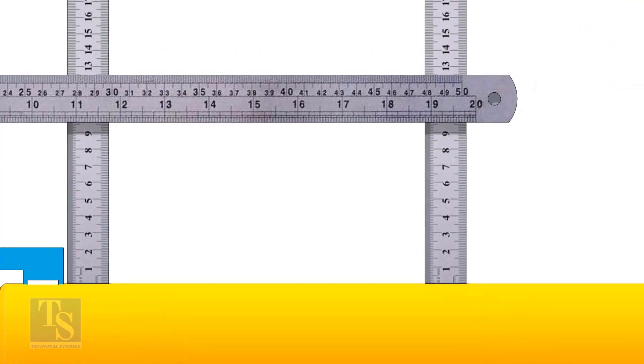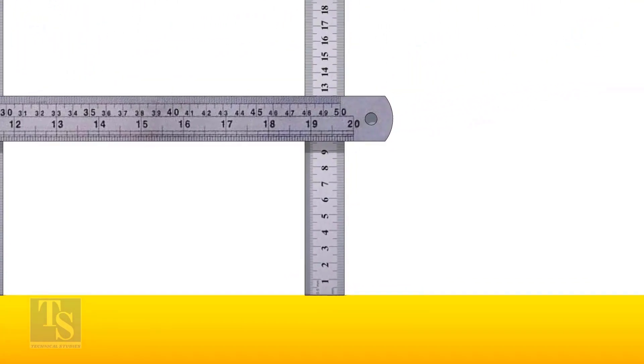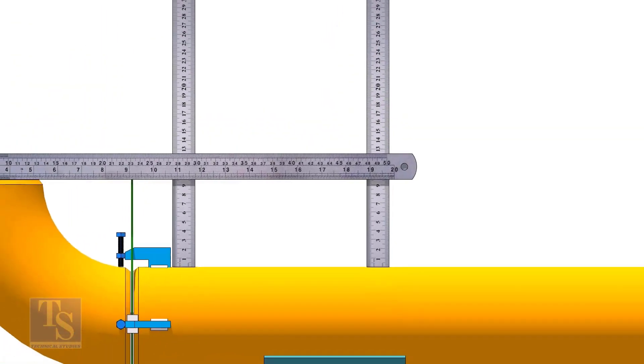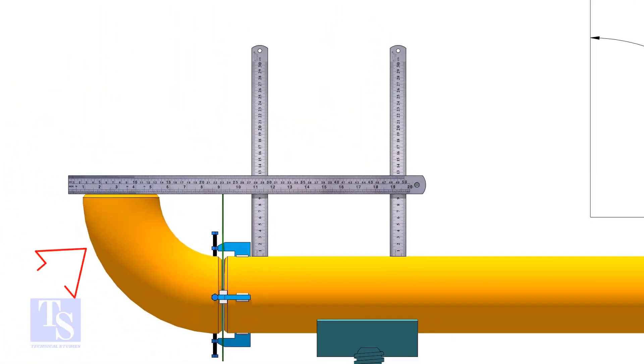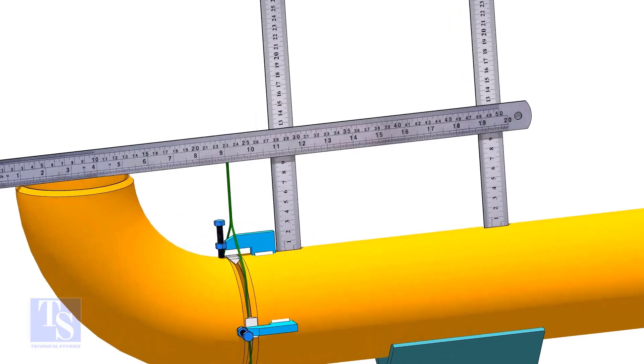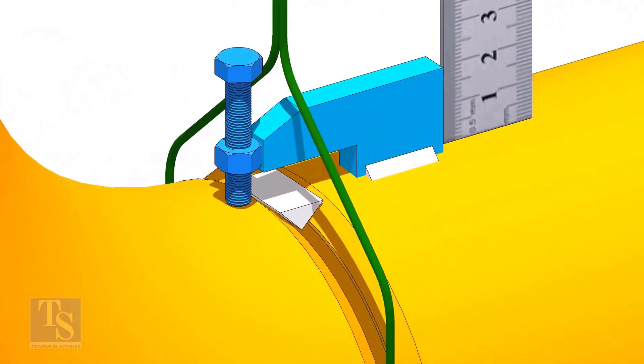If the distances are not equal, rotate the elbow to correct it. Tack weld in the top and bottom side of the joint.